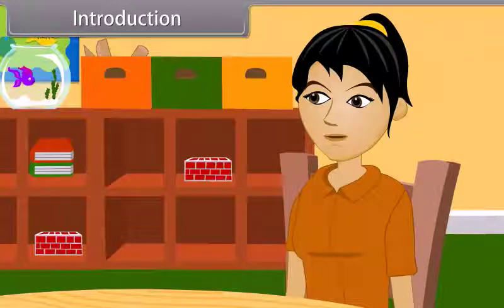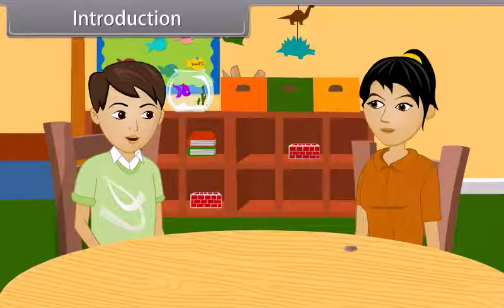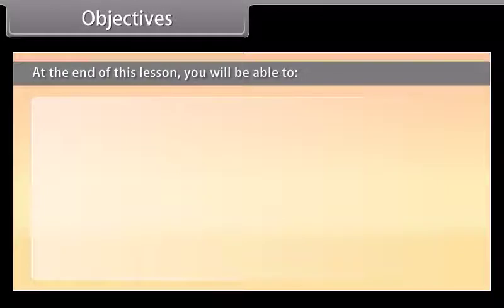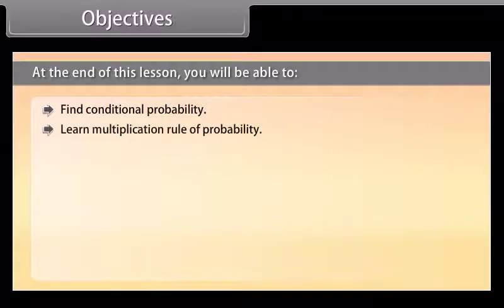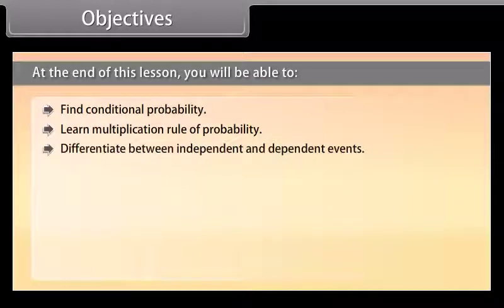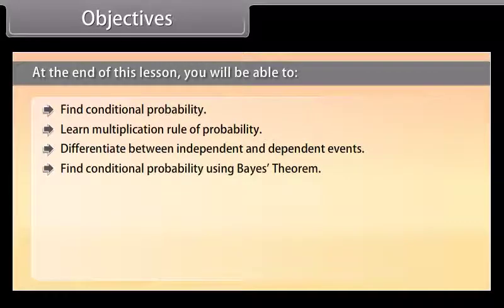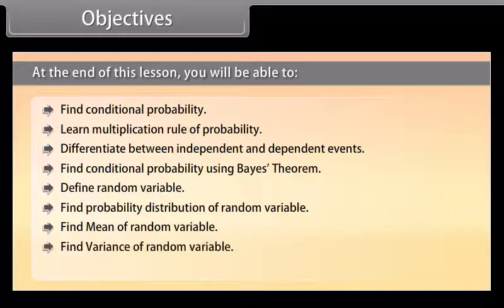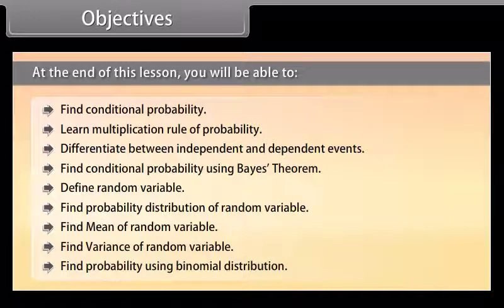Would you like to learn more about it? Yes, of course. Come, I will teach you about probability — it's a very interesting topic, I am sure you will like it. Objectives: at the end of this lesson you will be able to find conditional probability, learn the multiplication rule of probability, differentiate between independent and dependent events, find conditional probability using Bayes' theorem, define random variable, find probability distribution of random variable, find mean and variance of random variable, and find probability using binomial distribution.